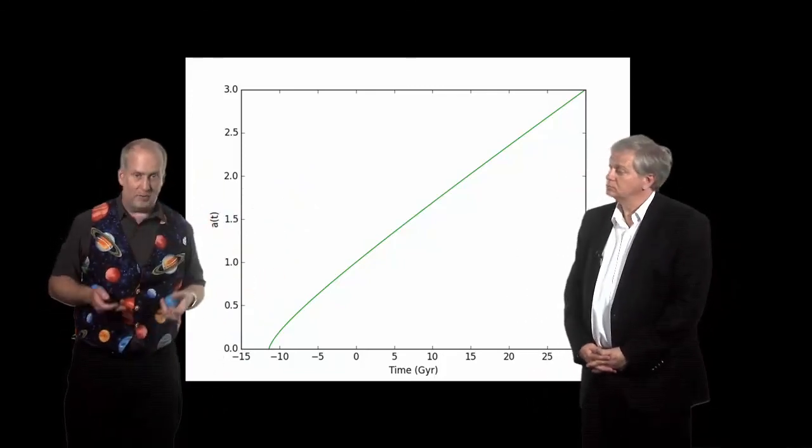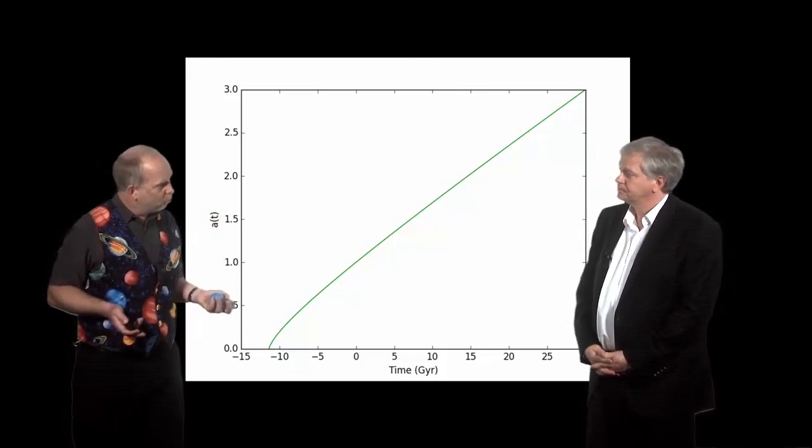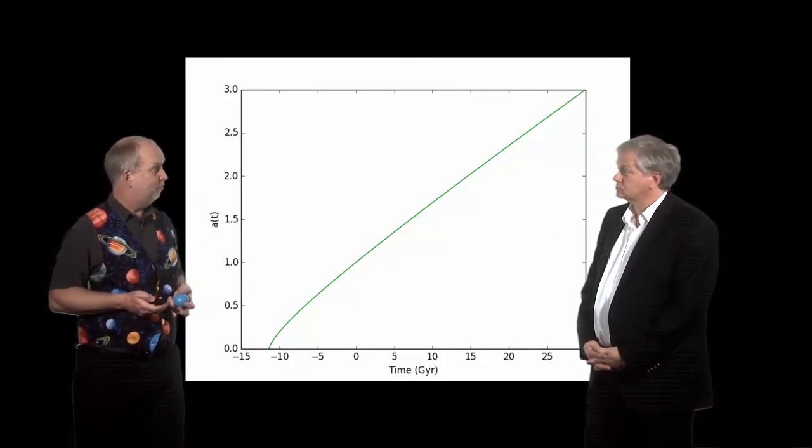In our simple model here, we have a universe that will come back to a halt, a universe that keeps going forever, and a universe that keeps on going forever faster.